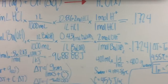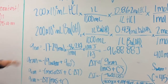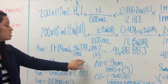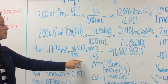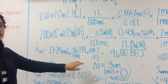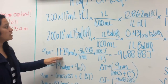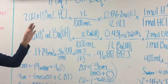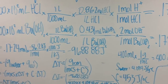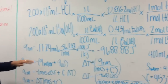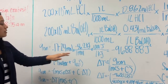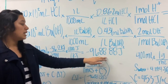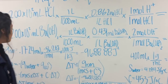Now we're trying to find the heat of the reaction. We're also given that the heat of neutralization is negative 56.2 kilojoules per mole. Once we plug in the moles of H⁺ and OH⁻ — since they're the same, it doesn't matter which — we find that there is negative 9,688.88 joules.